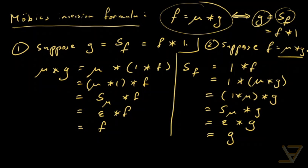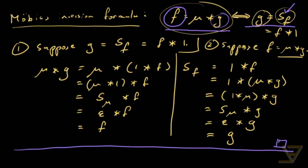The most useful case is that if we know f = μ★g, we can find that g is the summation function of f — which allows us to compute the summation function of f. And in the other direction, if we know the summation function of f, we can recover f from it. In some ways that's even more important — being able to recover a function from its summation function. Thanks for watching, and I'll see you next time.